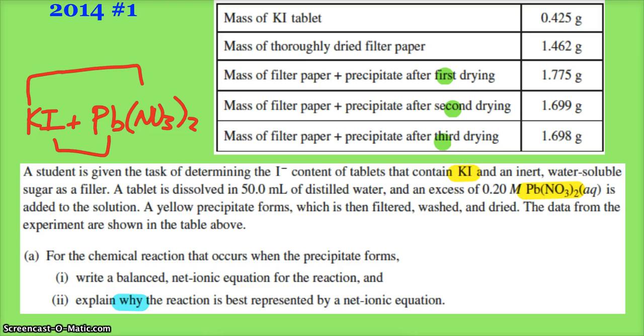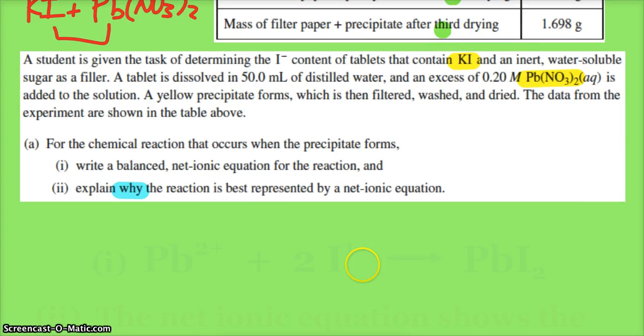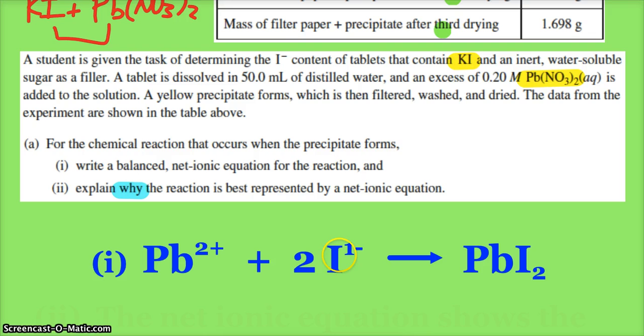Part A: for the chemical reaction when the precipitate forms, write a balanced net ionic equation for this reaction. So we've got the Pb²⁺ ion reacting with two of our iodides to form the PbI₂. To be super dope fantastic, you might want to put aqueous for the ions and solid for the lead(II) iodide, but it's not necessary—it didn't say must include state symbols.